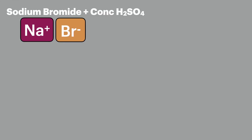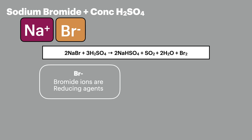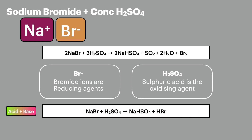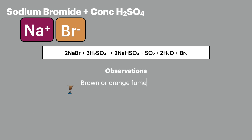Sodium bromide is where the reactions start to get more interesting. The overall reaction shows sodium bromide reacting with concentrated sulfuric acid, where the Br⁻ ions are the reducing agents and the sulfuric acid is the oxidizing agent. This reaction is a two-step process. In the first step we have a similar reaction to sodium fluoride and sodium chloride, with the production of hydrogen bromide. In the second step the formed HBr reduces the sulfuric acid down to sulfur dioxide. In this reaction you'll see the brown or orange fumes of bromine and the choking fumes of sulfur dioxide.